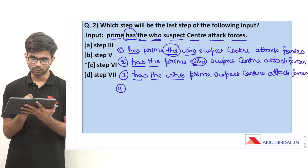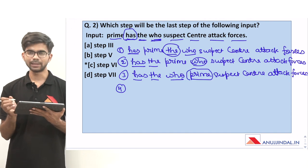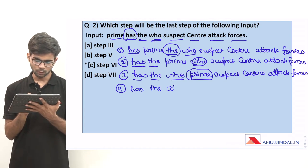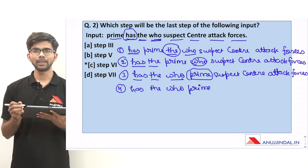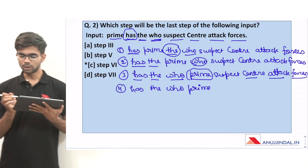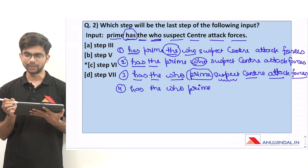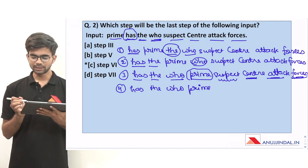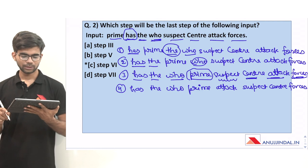For step 4, we have 'has', 'the', 'who' arranged. From the remaining 5 words, 'prime' has 5 letters and is already in the correct position. The next words to consider are 'center', 'attack', and 'forces' — each with 6 letters — and 'suspect' with 7 letters comes afterwards. Among center, attack, and forces, 'attack' comes first because A comes before C and F in the dictionary. Step 4 is: has, the, who, prime, attack, suspect, center, forces.